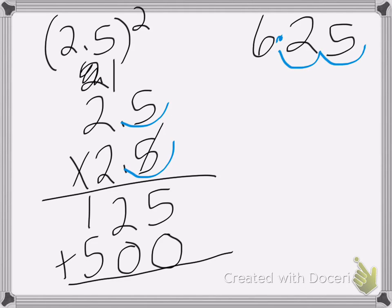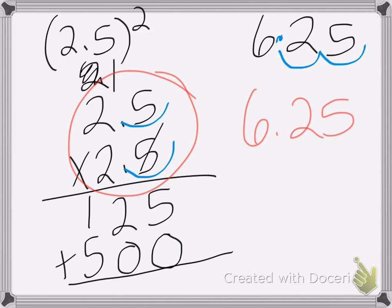To double check, just look at your numbers. These two numbers are 2.5 and 2.5, so 2 times 2 is 4, or 3 times 3 is 9. So it's got to be somewhere between 3 and 9. 6.25 is right in between those two, and it makes sense.